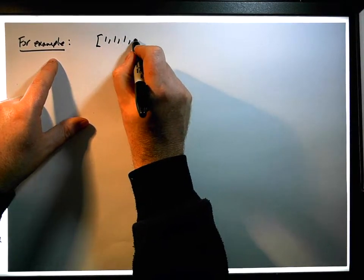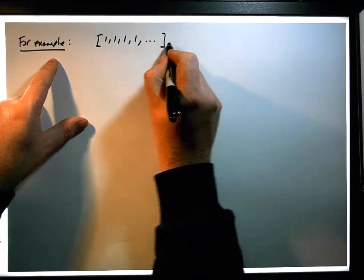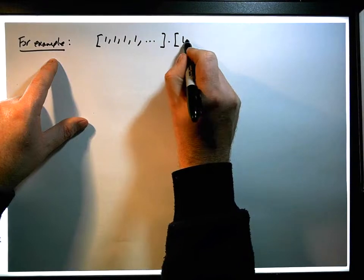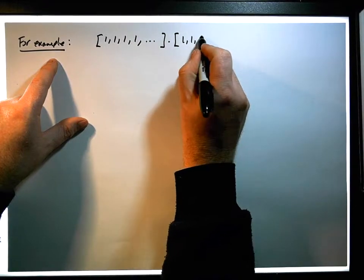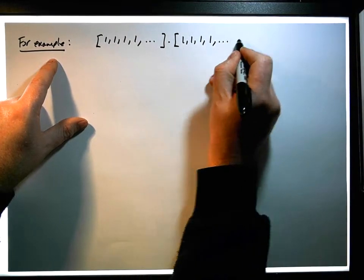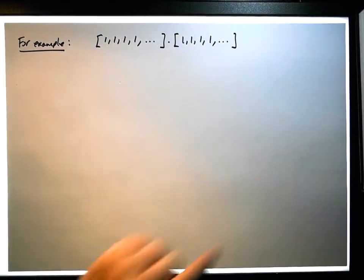1, 1, 1, dot dot dot times the sequence 1, 1, 1, dot dot dot — and don't forget, these are the constant sequences.